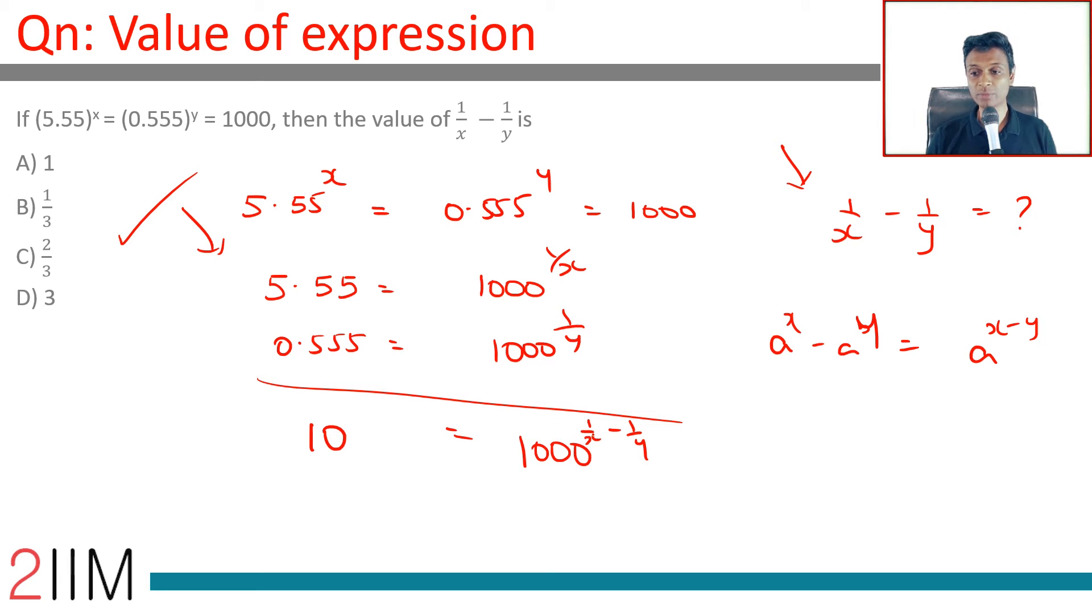1000 to the power 1 by x minus 1 by y is 10. What is 10? 10 is 1000 to the power 1 by 3. This is 1000 to the power 1 by x minus 1 by y, or 1 by x minus 1 by y is 1 by 3.